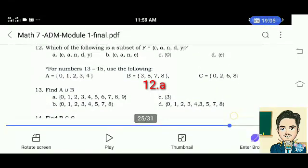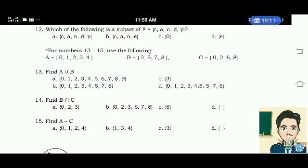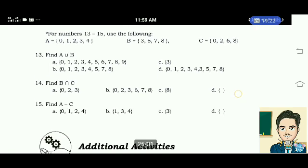Number 13. For numbers 13 to 15, use the following: Set A is equal to the elements 0, 1, 2, 3, 4. Set B is equal to the elements 3, 5, 7, 8. Set C is equal to the elements 0, 2, 6, 8. Find A union B.